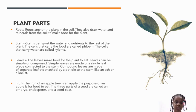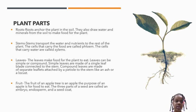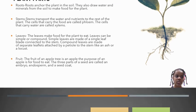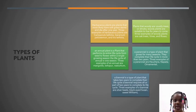Fruit: The fruit of an apple tree is an apple. The purpose of an apple is for food or to eat. Three parts of a seed are the embryo, endosperm, and seed coat. Herbaceous plants are plants that most likely have soft green stems and die after one year.